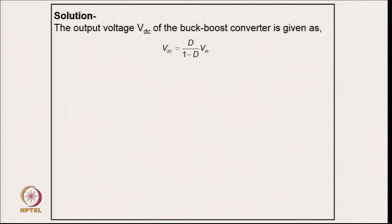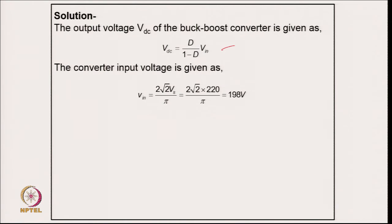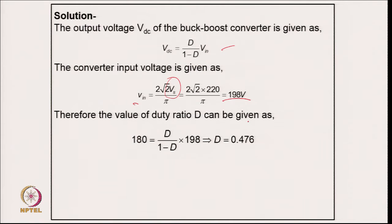Coming to the numerical solution: the output voltage V_dc of the buck-boost converter is given by V_dc = (D / (1 - D)) × V_in. The converter input voltage V_in is calculated from the average of the supply RMS voltage after the diode rectifier, giving 198 V. Therefore the duty ratio is estimated from the above relation, and putting in the values we get duty cycle D = 0.476, which is less than 0.5.